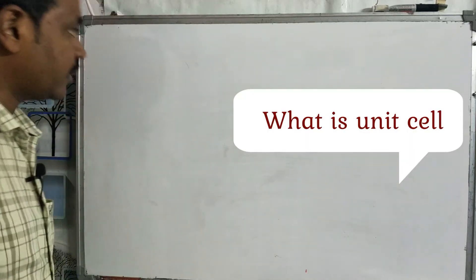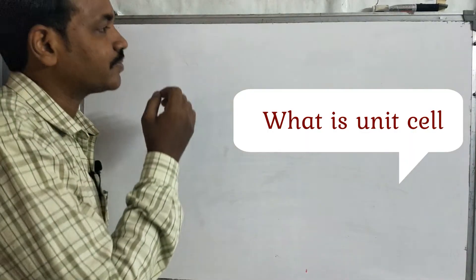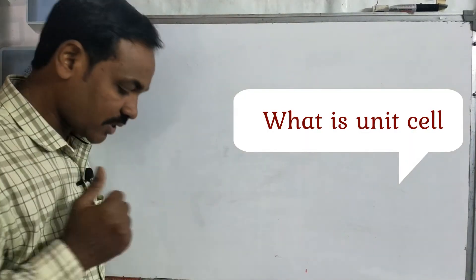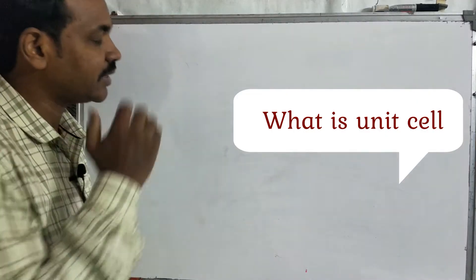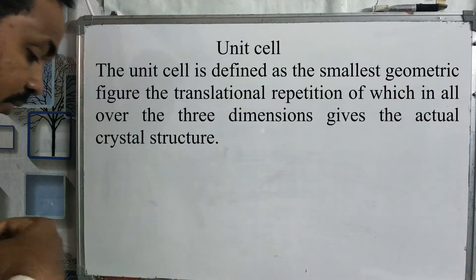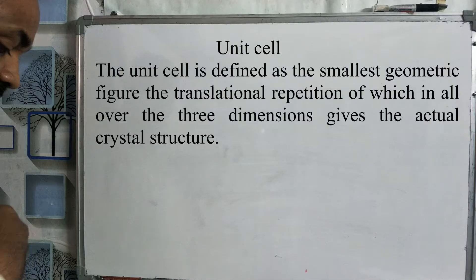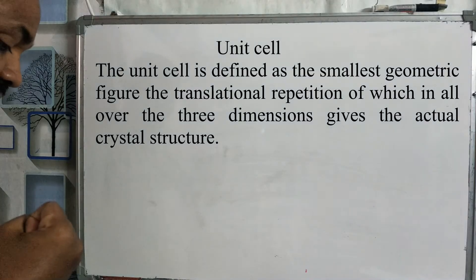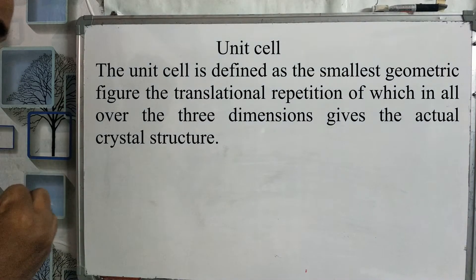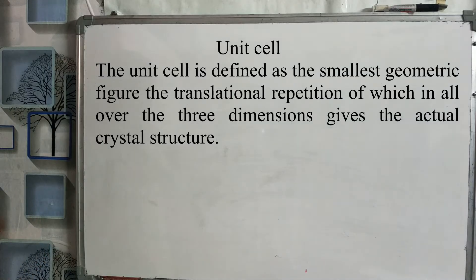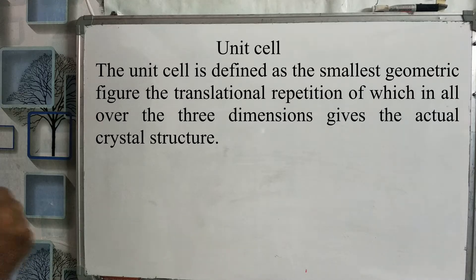Good morning, people. Today I am going to discuss about unit cell in the crystal graph. Unit cell is defined as the smallest geometrical figure. The translational repetition of the cell over the three-dimensional space gives the actual crystal structure. This is the definition.